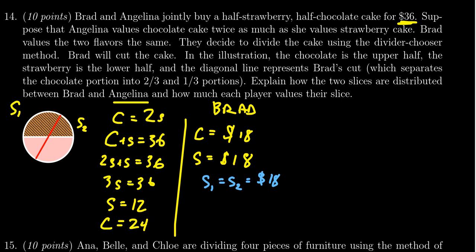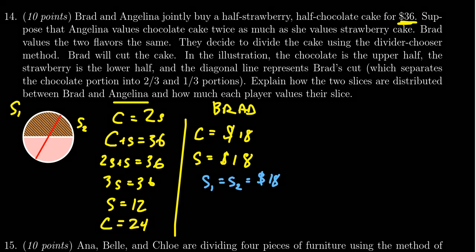Because he's the divider in a divider-chooser, both of these two slices are going to be of equal value, a fair share which is $18. But of course, to make this a legitimate cut, a rational cut, we did have to describe Brad's value system there.